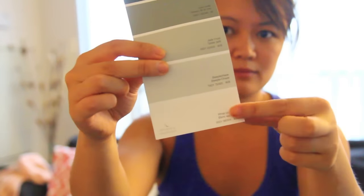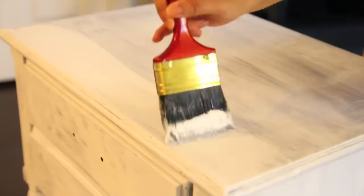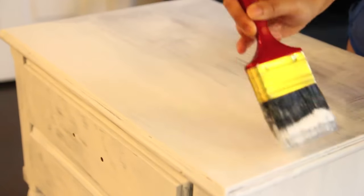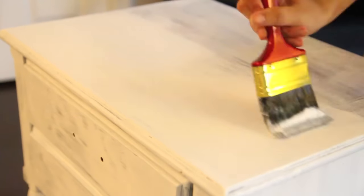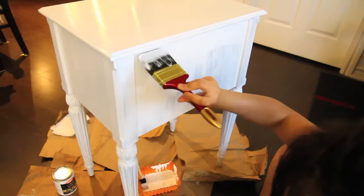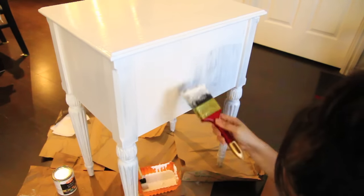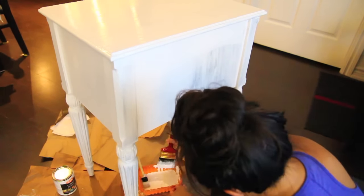Now once your primer is dry it's time to paint. So I'm using the white on white by CIL which has kind of slight gray green undertones which will look really nice with the gold accents that I'll be adding. Now you may want to do two or three coats to make sure you get some nice even coverage on your piece.